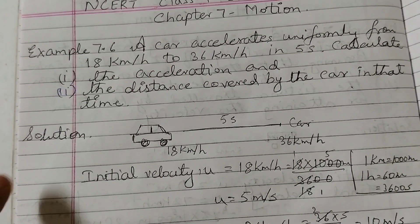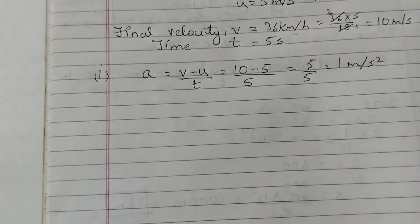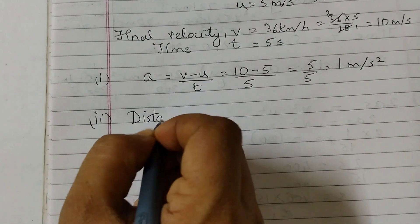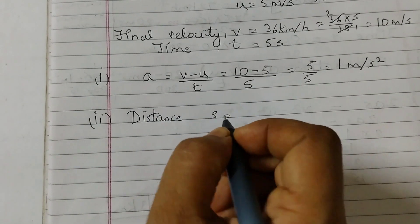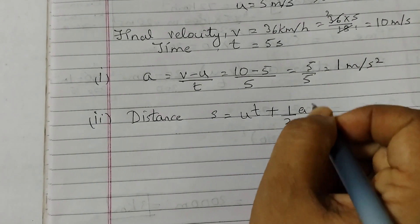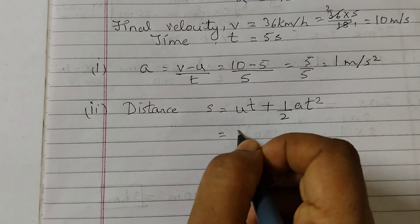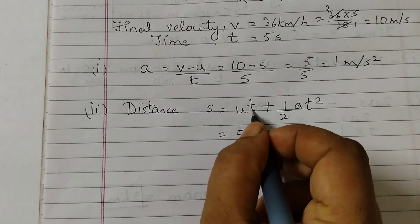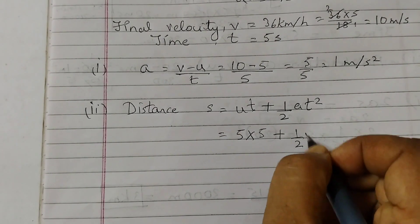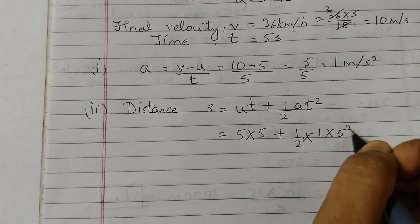The second part of the problem requires us to find the distance covered by the car. For the distance we will use the formula: s = ut + ½at². We know u is 5, time is 5, acceleration is 1 (which we just found), and time is 5 seconds, so t squared is 5 squared.